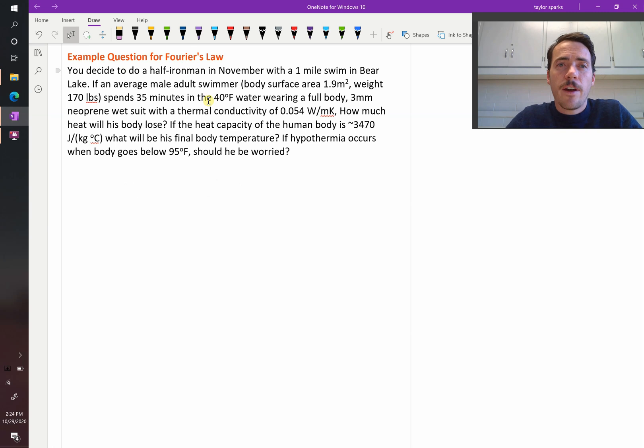It says, you decided to do a half Ironman in November with a one-mile swim in Bear Lake. If an average male adult swimmer has some body surface area and some weight, and they're going to spend 35 minutes in 40 degree Fahrenheit water wearing a full body three millimeter neoprene wetsuit that has a thermal conductivity of 0.054 watts per meter Kelvin, how much heat will the body lose?